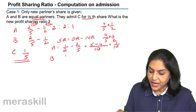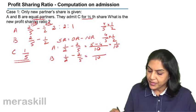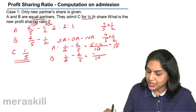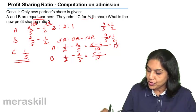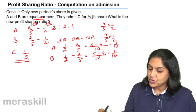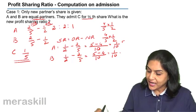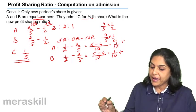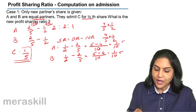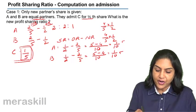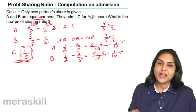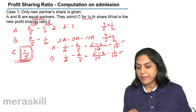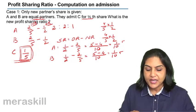In case of B, it is the same: 1 by 2 minus 2 by 5, LCM of 10, giving 5 by 10 minus 4 by 10 equal to 1 by 10. So sacrifice of A is 1 by 10, sacrifice of B is 1 by 10. Together, 1 by 10 plus 1 by 10 equals 2 by 10 or 1 by 5, which is the gain for C. A and B each sacrifice 1 by 10 on admission and C gains 1 by 5.